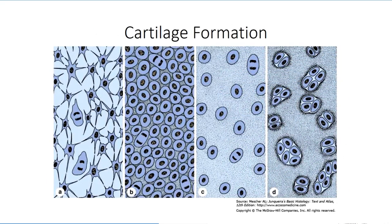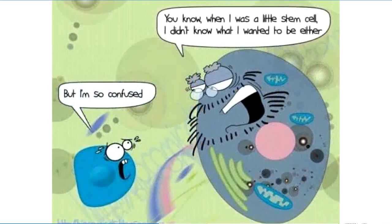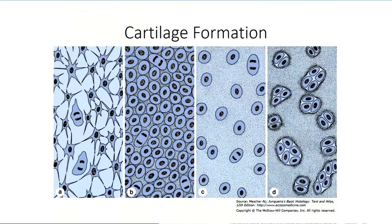Cartilage forms from embryonic mesenchyme through the process of chondrogenesis. Mesenchyme is undifferentiated connective tissue containing mesenchymal stem cells. Stem cells can be thought of as students moving through different levels of schooling. At the top of the list are the pluripotent stem cells that have not gone through any differentiation and can become literally any tissue. These are like elementary school children that have the potential to become anything after they grow up. Mesenchymal stem cells have differentiated slightly to become some form of connective tissue cell, though the exact type has not been determined.